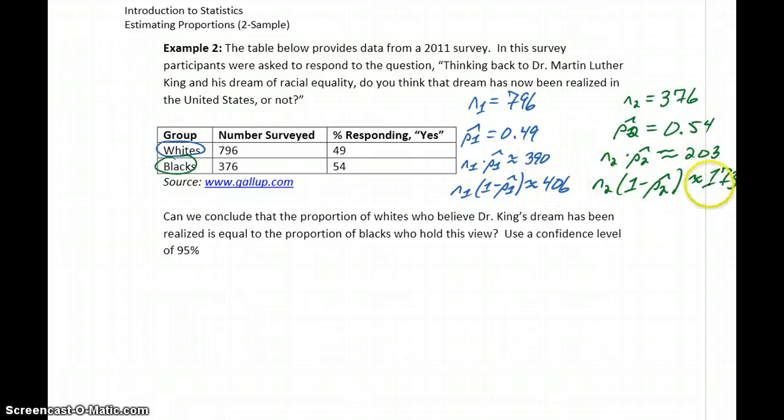So we have more than 10 successes, more than 10 failures in each case. The conditions are met to construct the two-sample confidence interval.